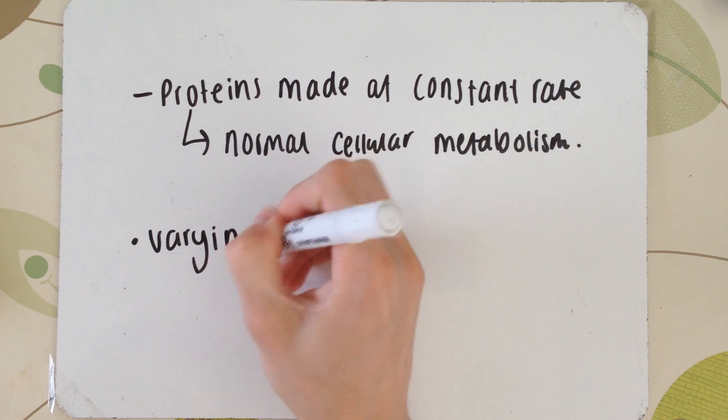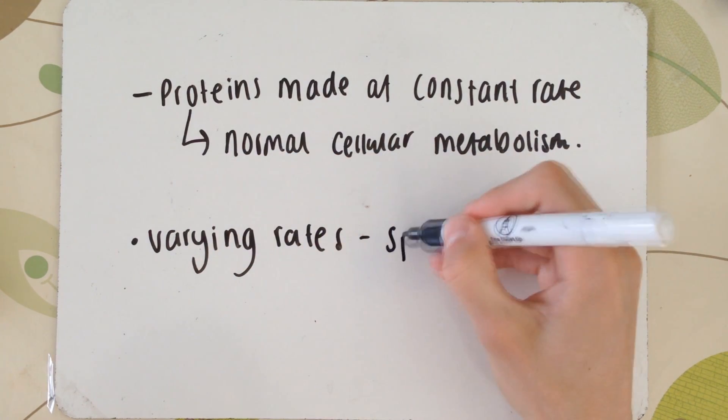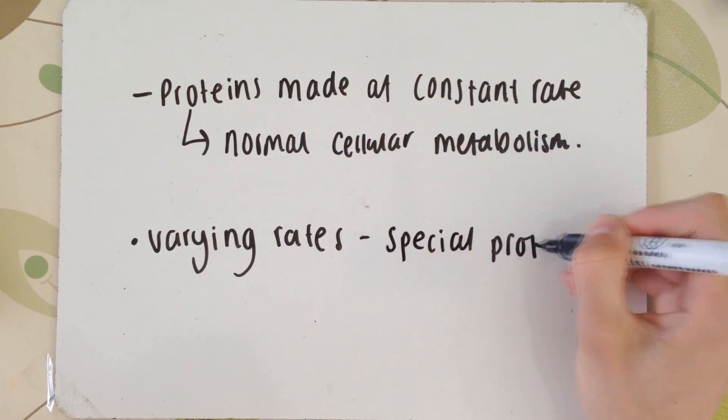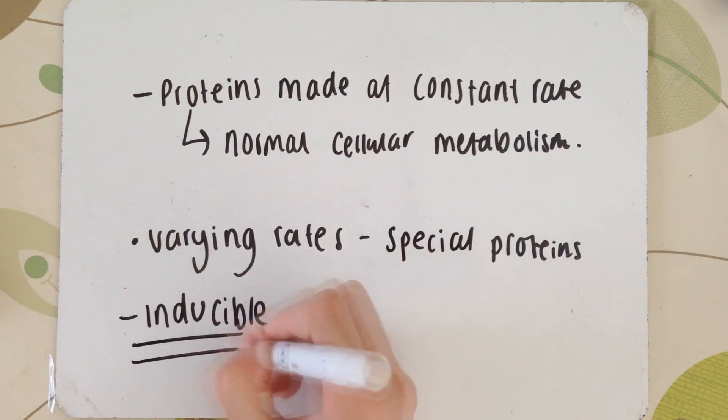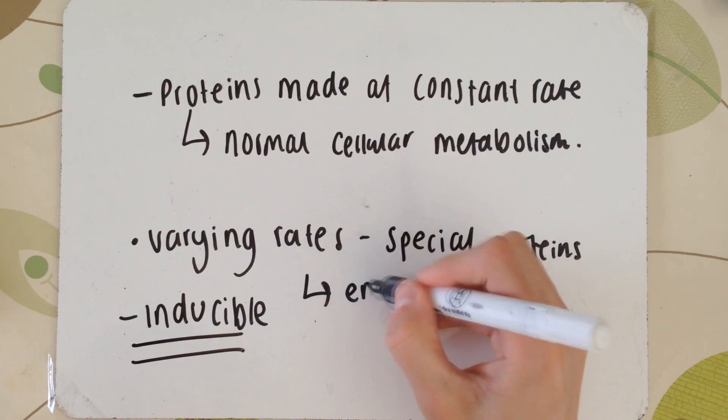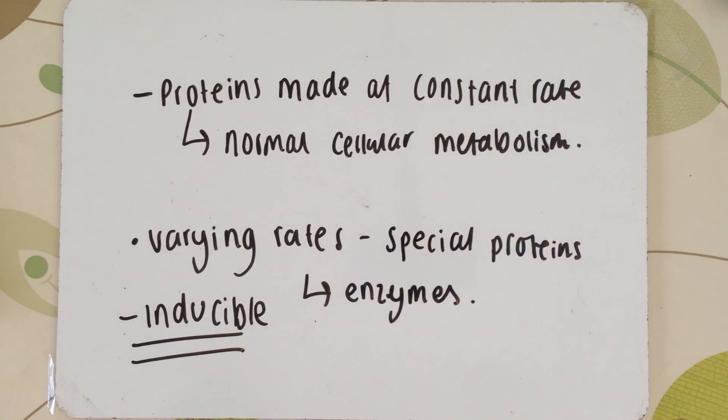However, special proteins, don't forget this includes enzymes, are made at varying rates. You could either have one or thousands, it varies. These are known as inducible proteins. And obviously, we're dealing with enzymes today, so these will be known as inducible enzymes.